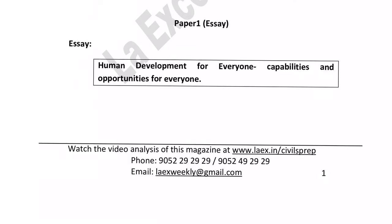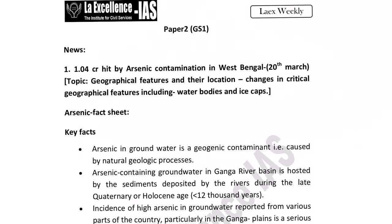The first important topic of the week in Paper 2 is about arsenic contamination in West Bengal. From a science and technology, environment and ecology point of view, a lot of questions come whenever we talk about arsenic contamination, or with respect to fly ash and other contaminants present in the atmosphere or groundwater. Especially when it is affecting crores of people in a particular area, that issue becomes of national importance and we need to know about it carefully.